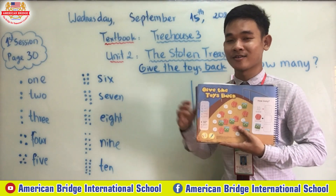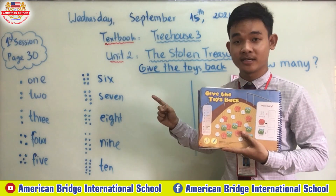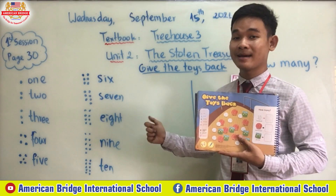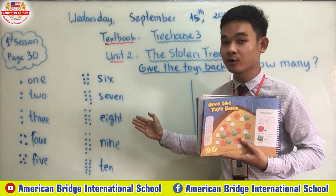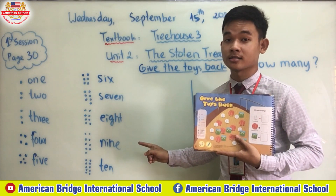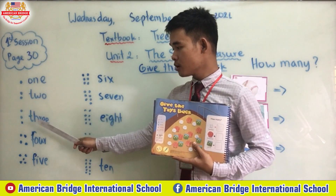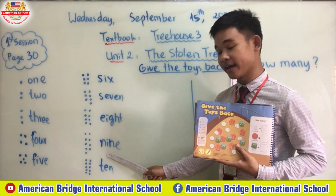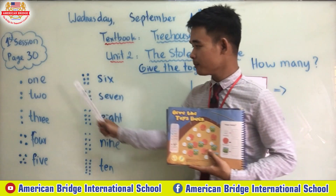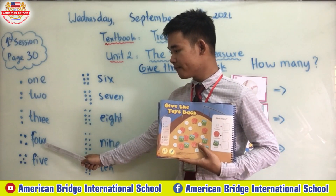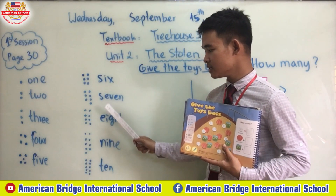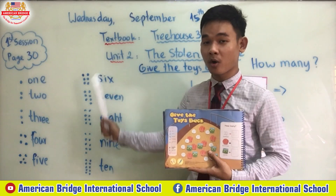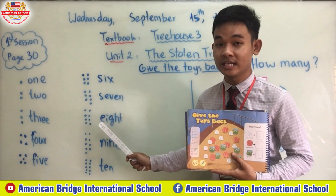Do you know how to write the number words from one to ten? Teacher hopes that you know how to write number words. Now let's count together from one to ten: one, two, three, four, five, six, seven, eight, nine, ten. Make sure you know how to spell all of the number words as well.